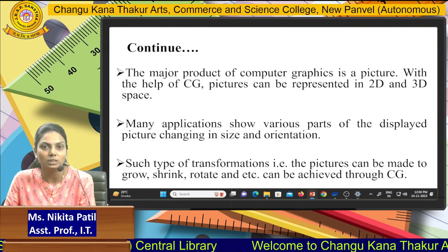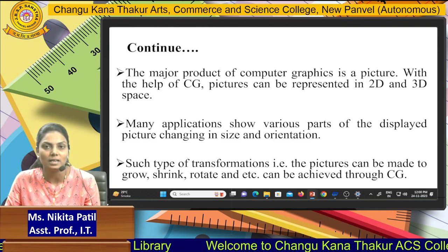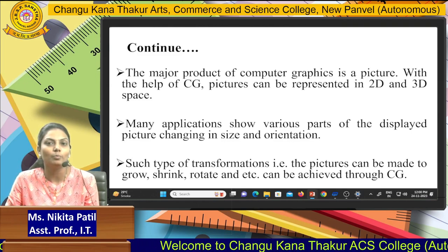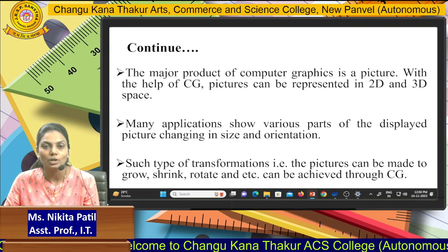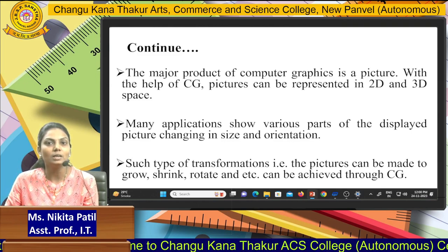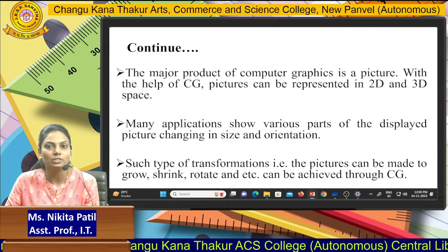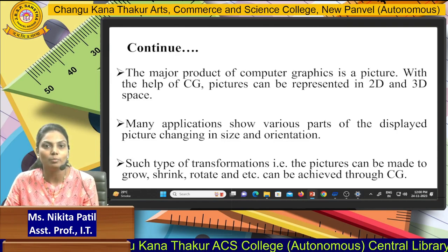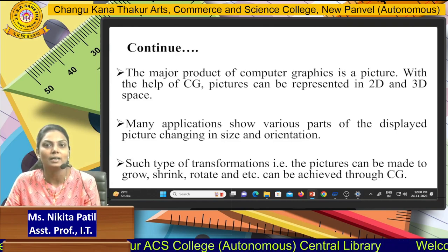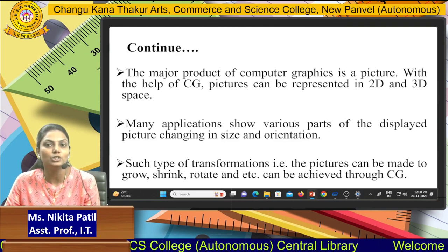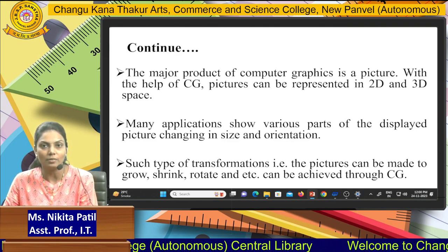Many applications display various parts of pictures, changing in size and orientation with the help of different transformations. Such transformations mean that pictures can be made to grow, shrink, rotate, and more — all achieved through computer graphics.